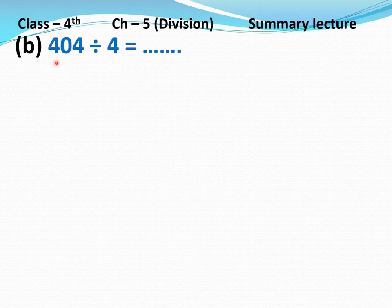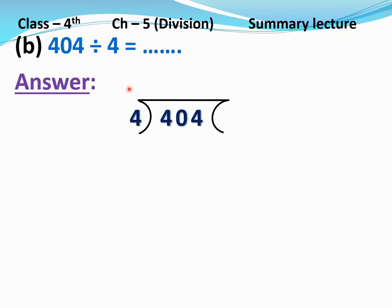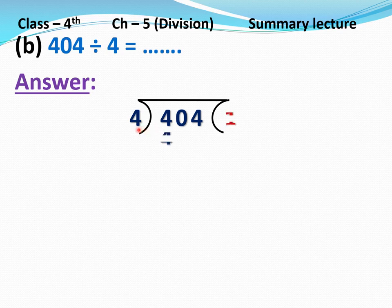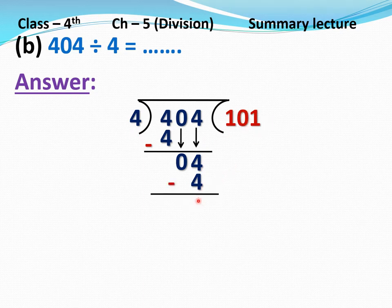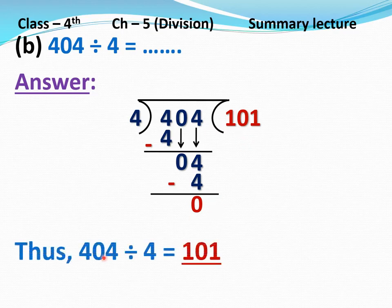Now part B: 404 divided by 4 equals dash. 404 is the dividend and 4 is the divisor. Write 4 here and 404 here. 4 is a one-digit divisor, so we take the first digit, that is 4. 4 multiplied by 1 equals 4. Subtraction: 4 minus 4 is 0. Take next number, that is 0. But 0 is less than 4, so we take one more digit, that is 4, and put 0 in the quotient. Now multiply 4 by 1: 4 multiplied by 1 equals 4. Subtraction: 4 minus 4 is 0. Quotient equals 101, remainder equals 0. Thus 404 divided by 4 equals 101. Clear?